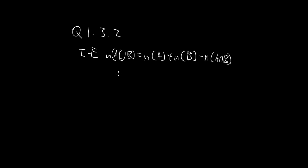So, here we have A union B is 8, the number of elements in A is 4, the number of elements in B is 6, and here is the unknown.